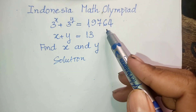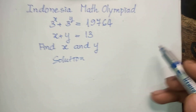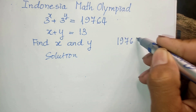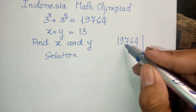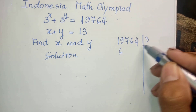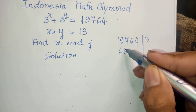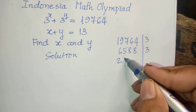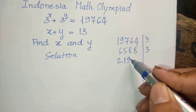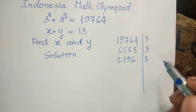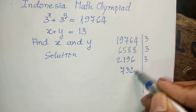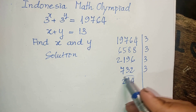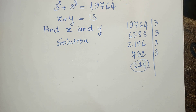Now I take 19764 and divide it into prime factors. We divide 19764 by 3 to get 6588, then divide again by 3 to get 2196, divide by 3 to get 732, divide by 3 to get 244. So we can divide 19764 by 3 multiple times.